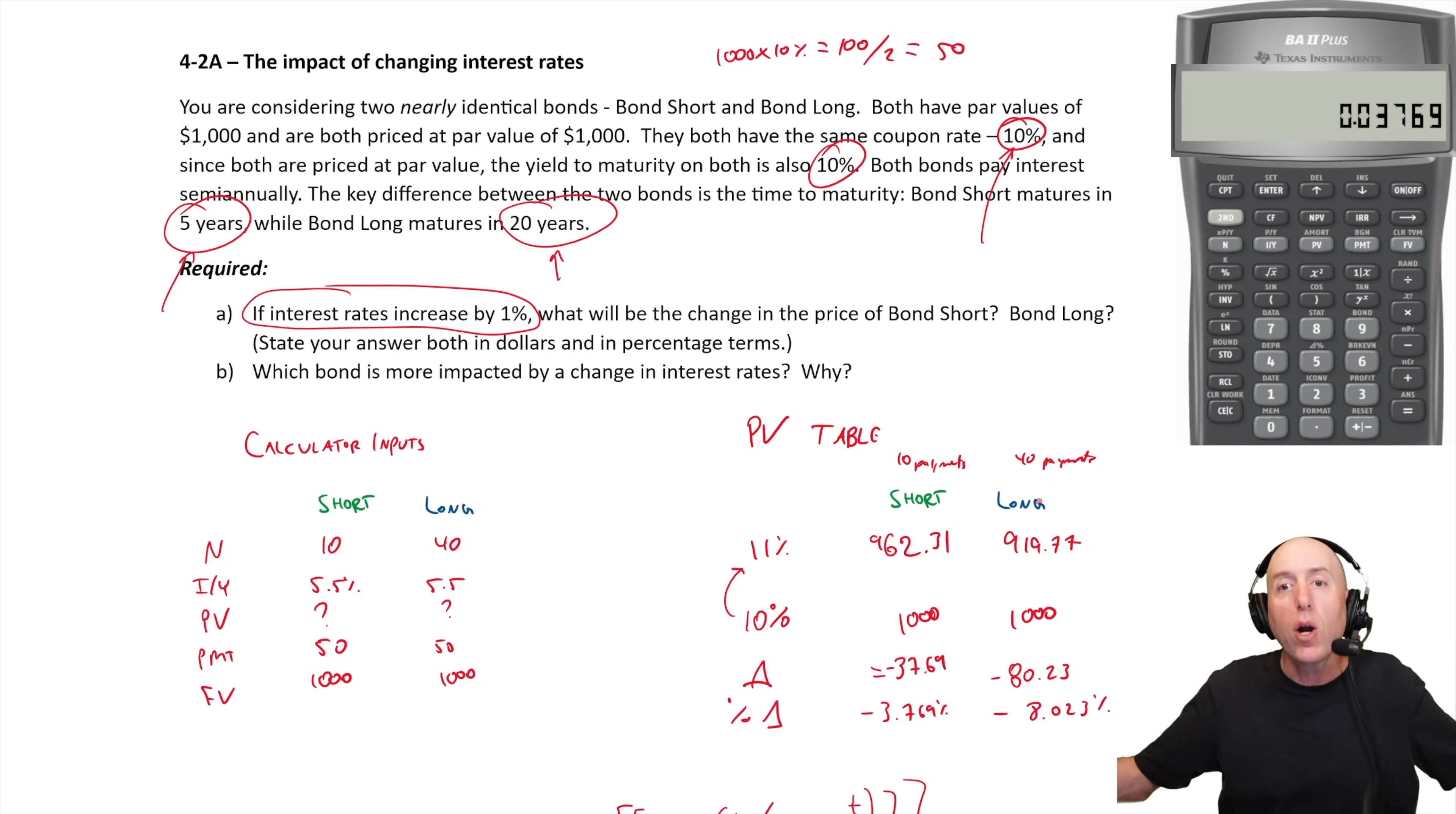Short would start selling at a premium, long would sell at a much larger premium because you're benefiting from having your locked in interest rate that is now higher than the market rate of interest. This is something to contemplate. If you think interest rates are going down you should be buying bonds.